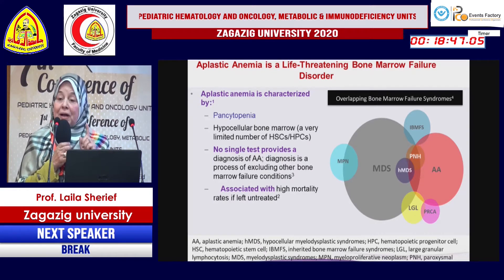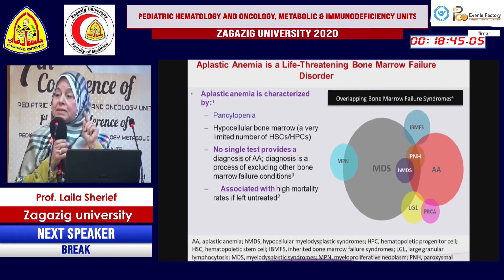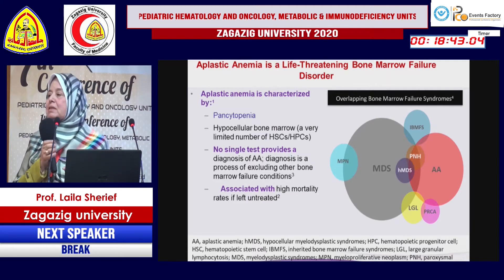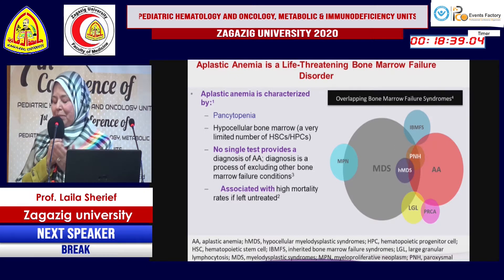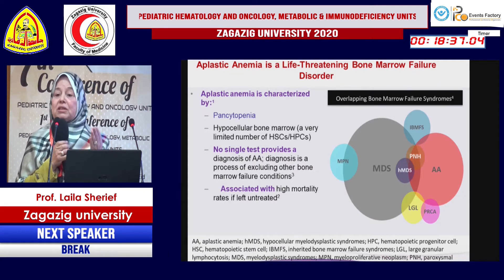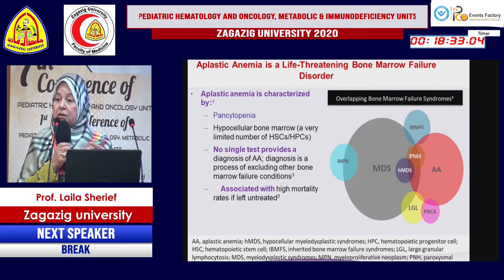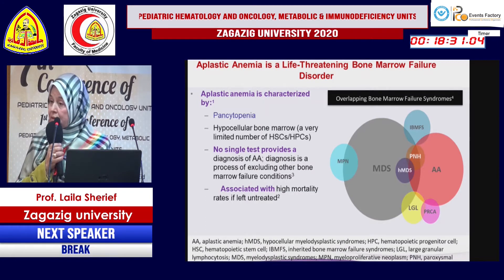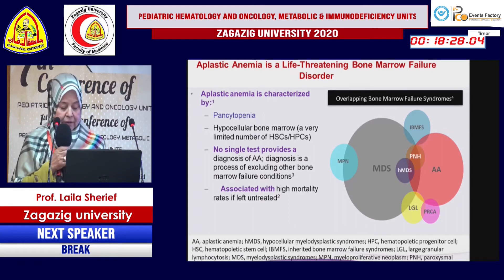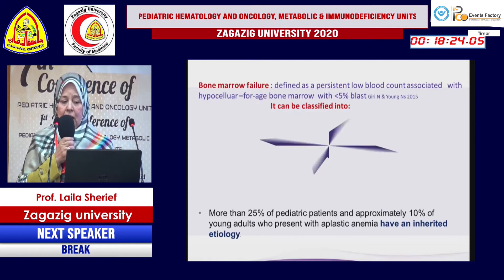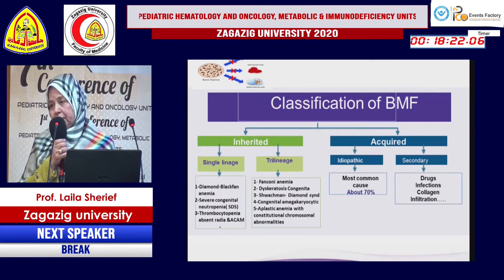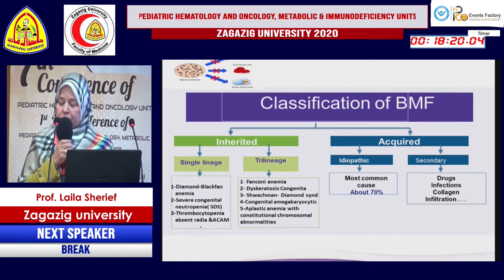Despite the histomorphological features, diagnosis is very difficult. As Professor Iqbalani Fischlawi said, we must differentiate acquired aplastic anemia from inherited bone marrow failure, from hypoplastic MDS, and from hematologic malignancy. The causes of aplastic anemia are either inherited or acquired.